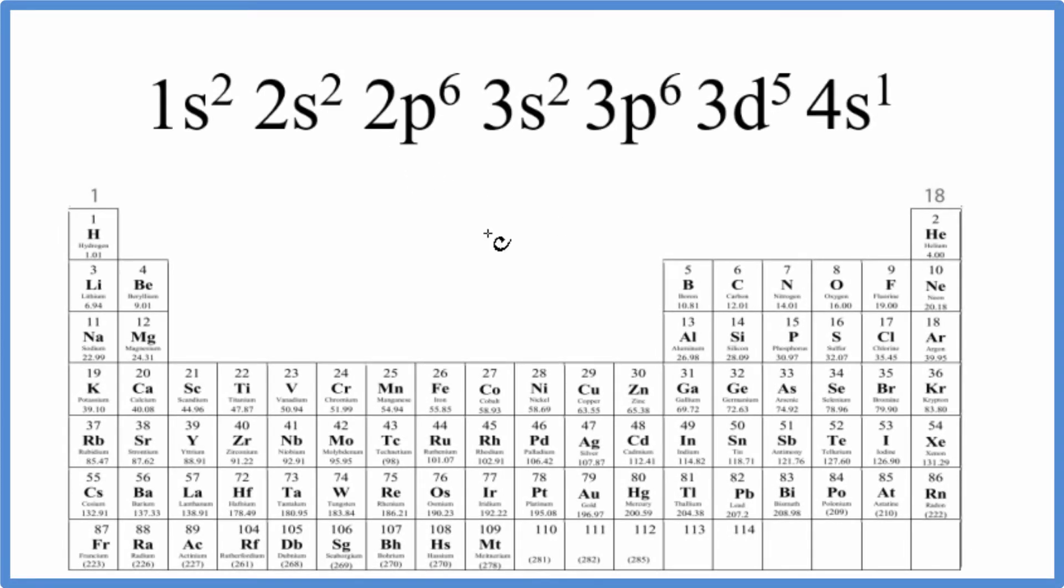There are two main ways we can figure out which element on the periodic table is represented by this electron configuration ending in 3d5 4s1.